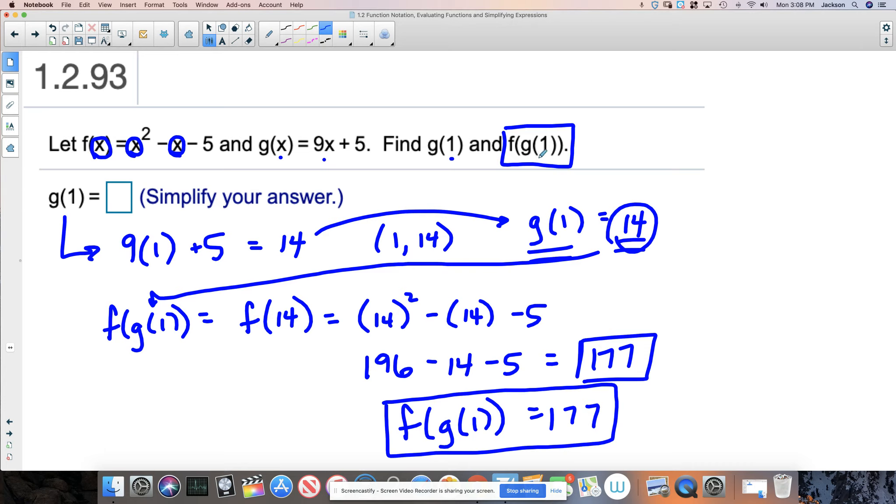Okay. But they're really testing whether you understand what this means. So just to clarify, we're plugging 1 into g first, getting the output for that, and then replacing that entire statement here with that number 14.